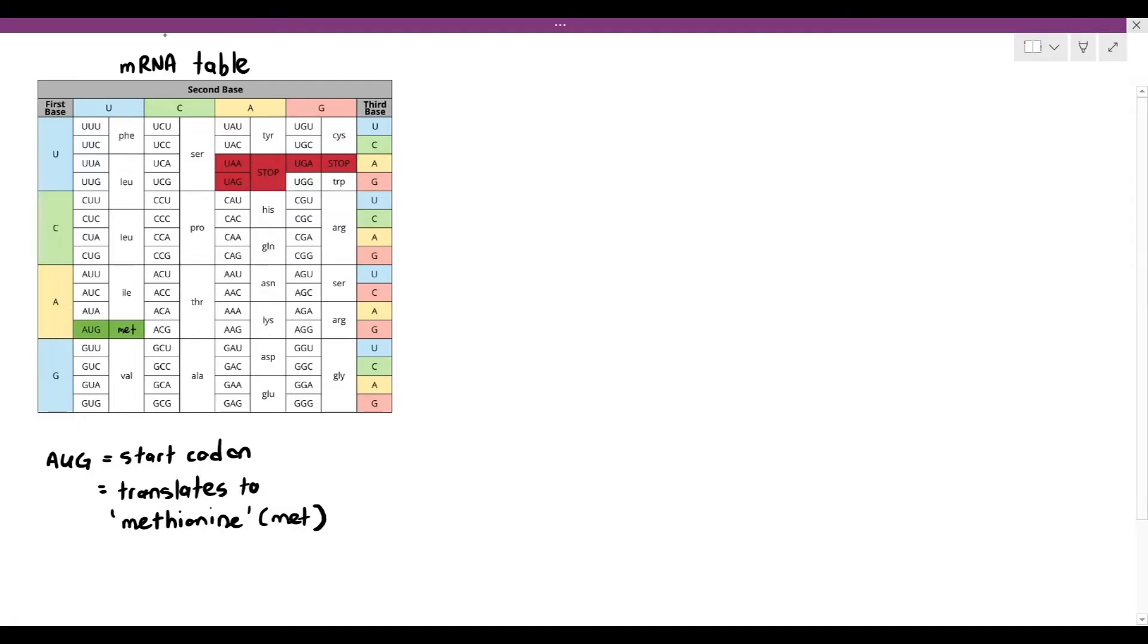If you notice, there are certain parts of the table where they've highlighted three codons in red: UAA, UAG, and UGA codons, and these translate into the stop codon because they will terminate the process of translation.